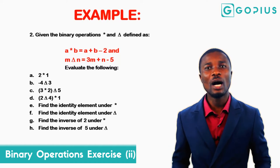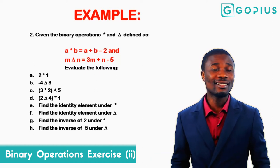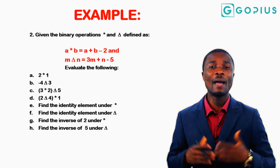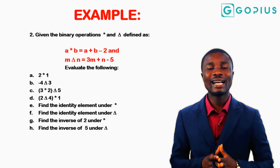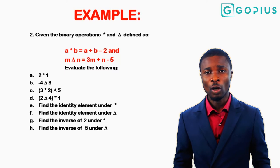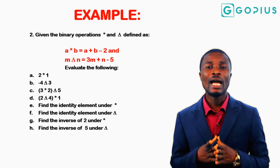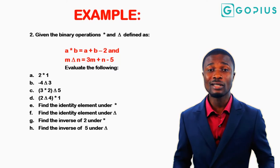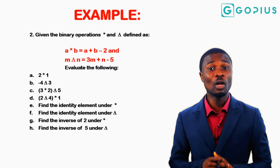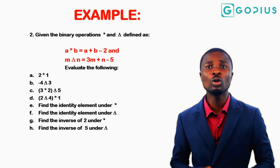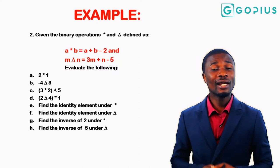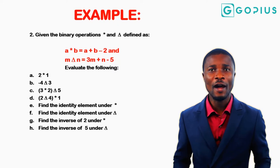We have about eight equations to evaluate. I've set it up so I can explain all the necessary ingredients of binary operations. We have a star b as a plus b minus 2, and m delta n as 3m plus n minus 5.